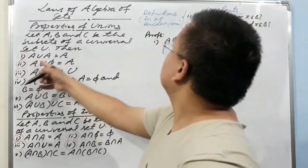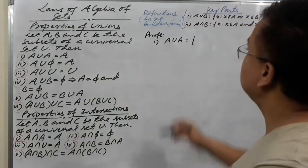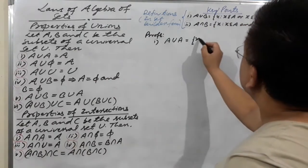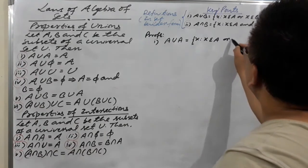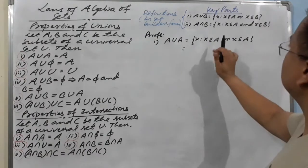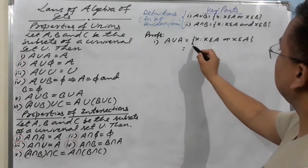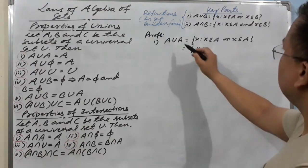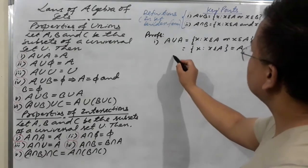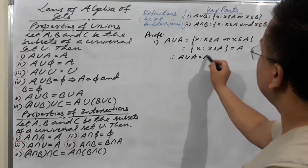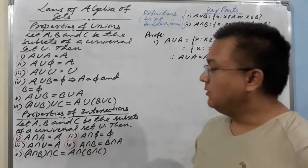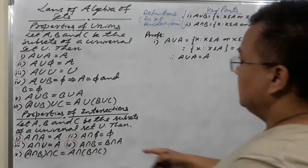A union A — using the definition — equals {x such that x belongs to A or x belongs to A}. Since it is the same thing repeating, we can simply write x belongs to A. Therefore A union A is equal to A.